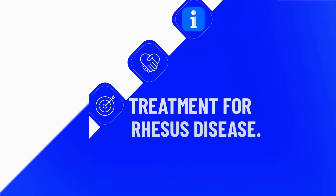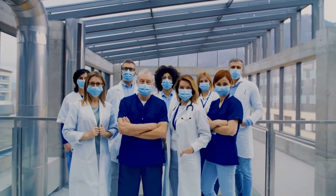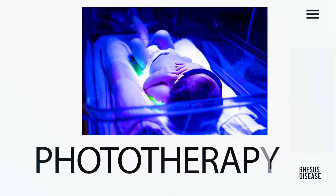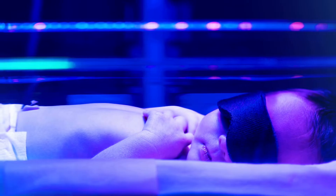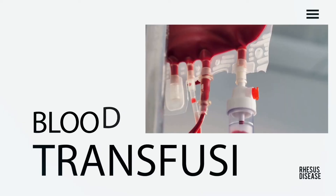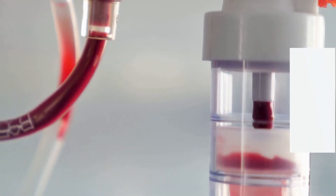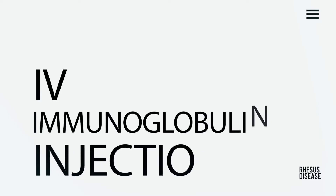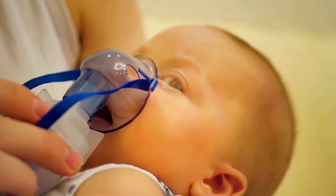For treatment, if the disease has already occurred, the child is admitted to a neonatal unit that specializes in caring for newborns. Phototherapy — placing the baby under lights — can help with the destruction of the newborn's blood cells caused by the maternal antibody response. Blood transfusions help reduce the severity of Rhesus disease, and IV immunoglobulins are given to prevent further destruction of the newborn's red blood cells.